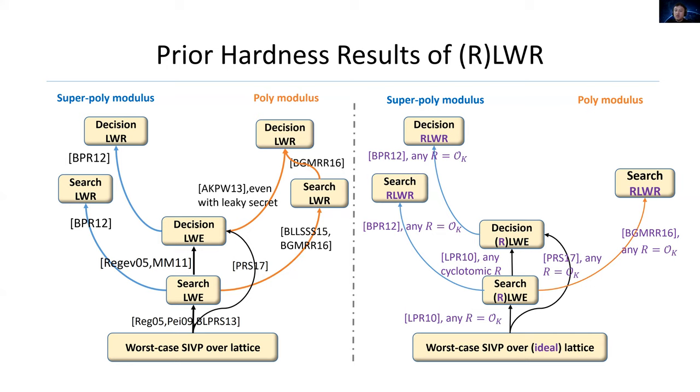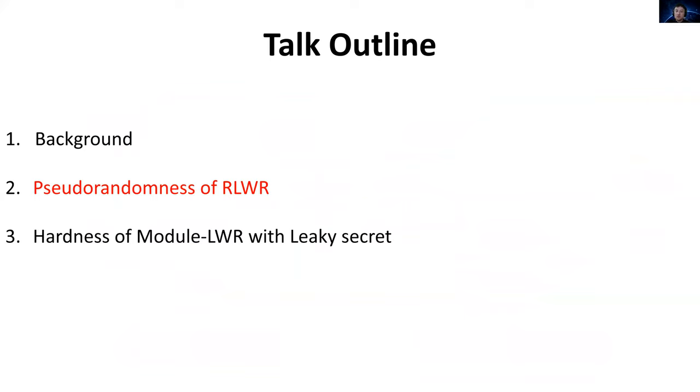However, in the ring setting, the results are limited. Besides the basic reduction line of ring LWR from prior works, we can also show reductions of ring LWR with superpoly modulus by the similar methods of BPR12. The work BGMR16 also shows a reduction from search ring LWR to search ring LWR with poly modulus. But there are two main open questions in the ring setting compared with plain LWR. On one hand, we don't know the pseudorandomness of ring LWR with poly modulus. On the other hand, the hardness of ring LWR or module LWR with leaky secret needs to be determined.